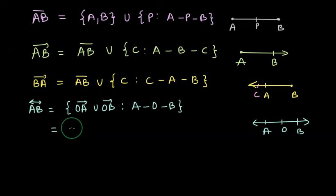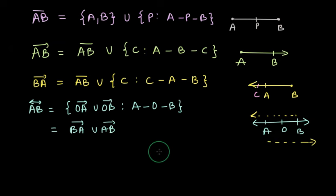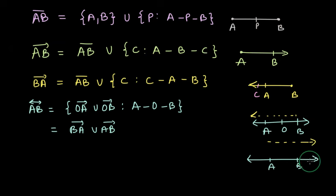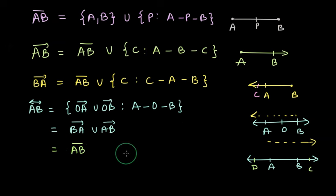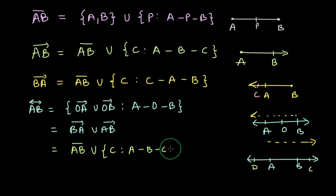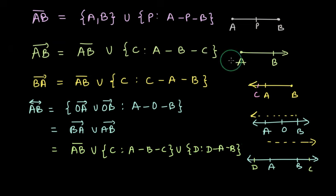Another way to write line AB in set notation is by considering two more points C and D. We can write it as the union of segment AB, some point C such that B is between A and C, and some point D such that A is between D and B. These are many ways in which we can write line AB in set notation.